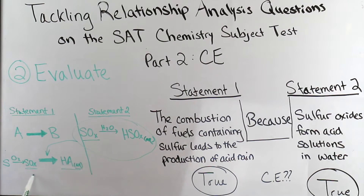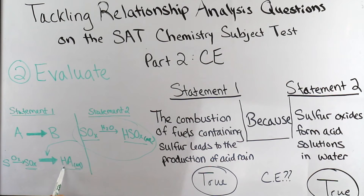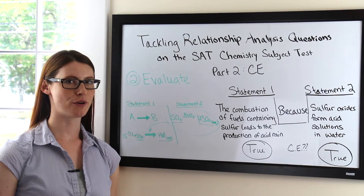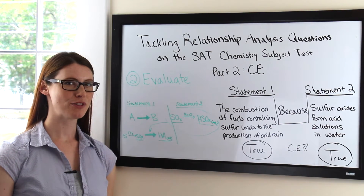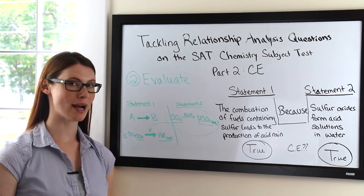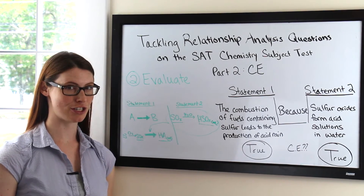We have our reactant on one side and our product on the other. Even though these two are not directly the same, they are a general acid. Therefore the chemistry makes sense and this is a correct explanation.